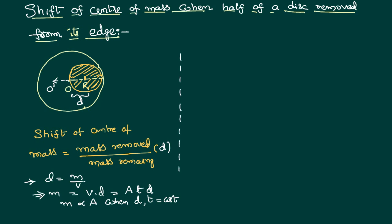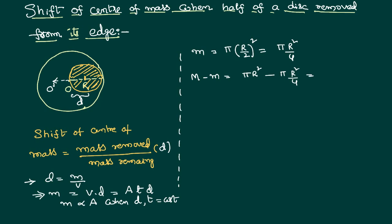Therefore, mass removed is proportional to the area of the removed disc. The removed disc has radius R/2, so mass removed is proportional to π(R/2)² = πR²/4. Mass remaining equals total area minus area removed: πR² − πR²/4 = 3πR²/4.